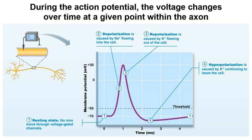During the action potential, the voltage changes over time at a given point within the axon. If we place a voltage probe in a small part of the axon, the tracing of the voltage change would look like the graph shown in this diagram. The action potential has three phases. The first is the depolarization phase, when the voltage rises from the resting membrane voltage to a peak of about plus 30 millivolts — the initial uphill segment of the graph, labeled as phase two in this diagram.